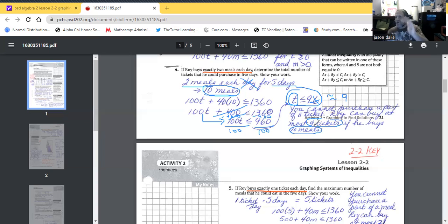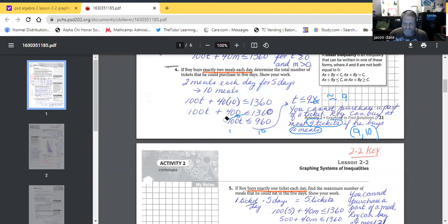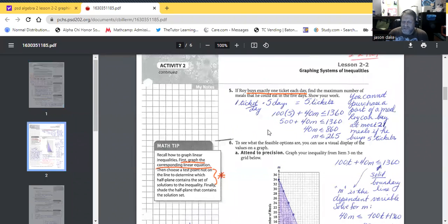So it's going to be the most he can buy. You cannot purchase a part of a ticket. Roy can buy at most 9 tickets if he buys 10 meals. So guys, there's a problem down below. I'm just going to go ahead and tell you that they want you to put this on a point. So use this down below when it gets time: 9, 10. Remember that. Pause the video if you have to, get a piece of paper, write everything down.